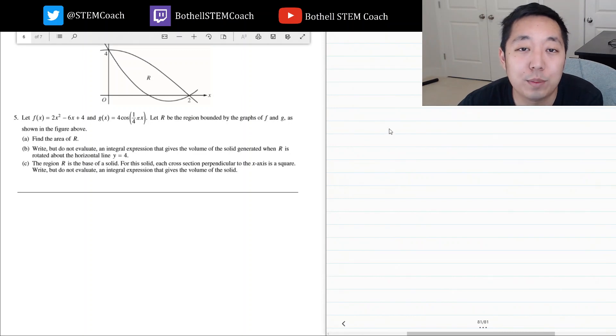Hey guys, this is Alan with Bothell STEM Coach and we're continuing on with the 2013 AP Calculus exam. Here we'll look at number 5. Let f(x) equal 2x² - 6x + 4 and g(x) equals that. Let R be the region bound by the graphs f and g and find the area of R.